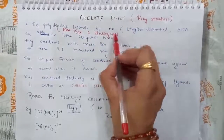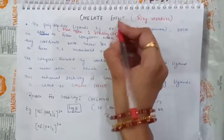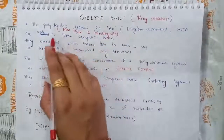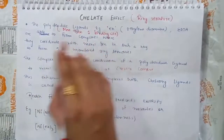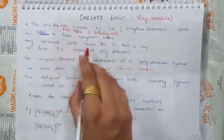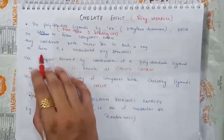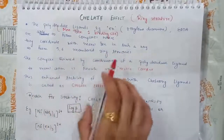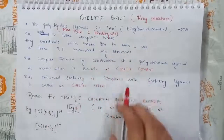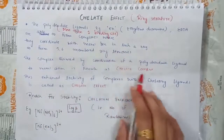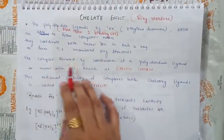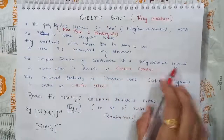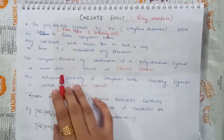For example, ethylene diamine, abbreviated as EN, and EDTA. They are able to form complexes where they coordinate with a metal ion in such a way to form 5 or 6 membered ring structures. These ring structures are called chelate complexes — complexes formed by the coordination of a polydentate ligand to a metal cation.